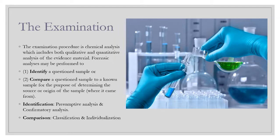Then comes comparison. Once we have identified the substance as a narcotic drug, we determine which narcotic drug it is — for example, heroin. In a group of suspects, only one person may be consuming heroin, and that person is individualized. First we classify into groups, and then in the final group we are able to individualize. This is the process of examination involved in forensic investigation.